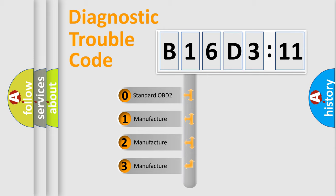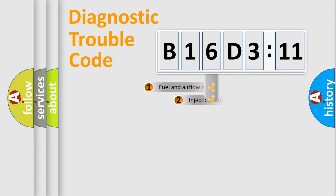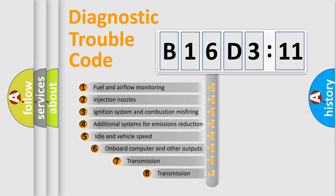If the second character is expressed as zero, it is a standardized error. In the case of numbers 1, 2, 3, it is a more prestigious expression of the car-specific error.